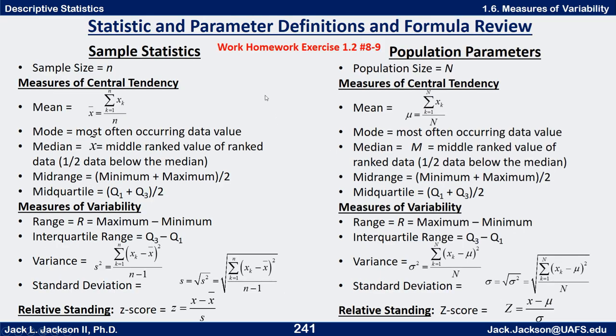Let's review some basic formulas. We have corresponding formulas for both sample statistics and population parameters. The sample size is lowercase n, counting how many items are in the sample. If we count the entire population, that's uppercase N. The mean is found by adding up the data values and dividing by how many you have. For a sample, we call it x-bar, summing the x values and dividing by n.